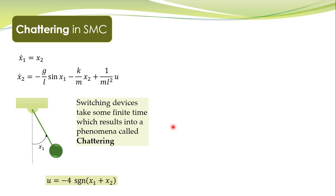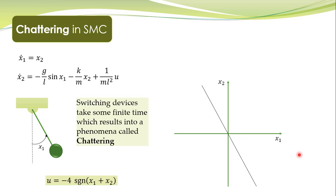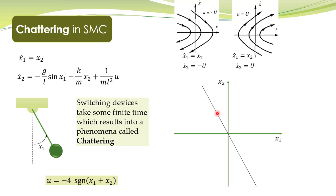Let's use phase portraits to explain this concept. Here is the phase plane — the x1 axis and the x2 axis. This line shows the sliding surface, that is, on this line s is equal to zero. On this side of the line s is less than zero, and on this side of the line s is greater than zero.